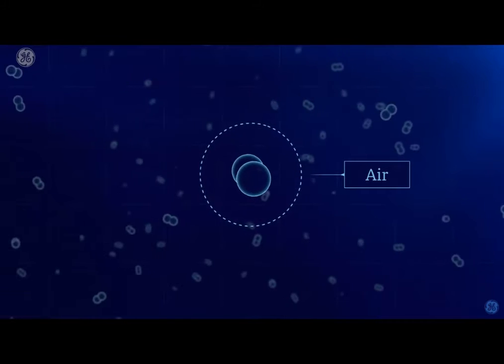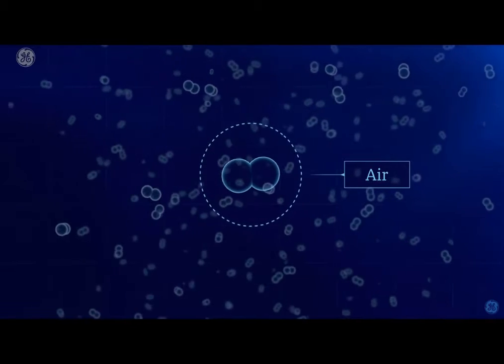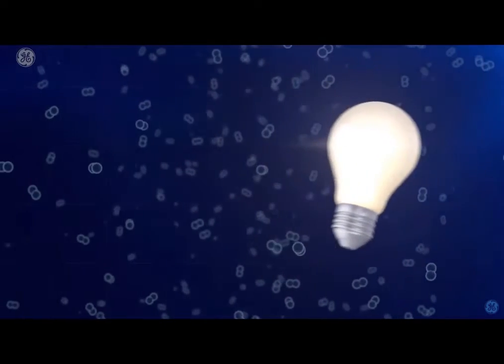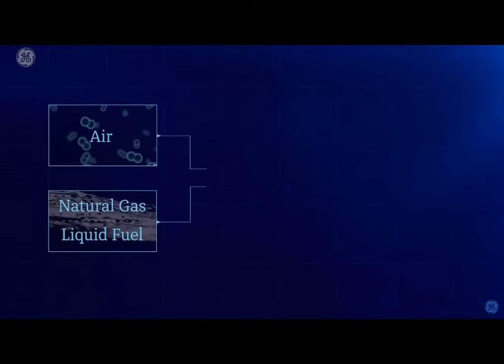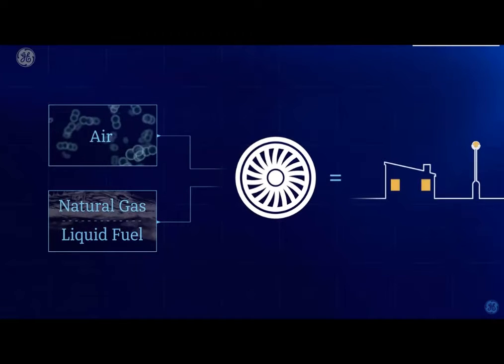Air—a lot of gaseous molecules floating all around us. It's great for breathing, and it turns out it's great for getting lights turned on. That's because air, along with abundant natural gas or other fuels, are the ingredients that combine in a gas turbine to spin the generator that produces electric current.